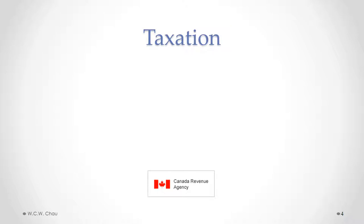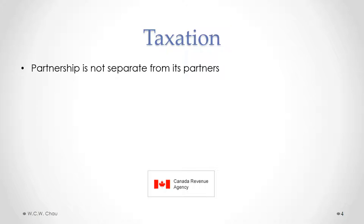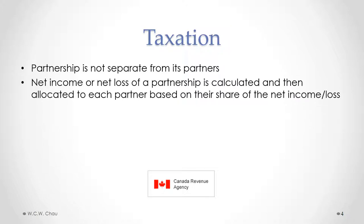How is a general partnership taxed? Remember the basic key legal aspect is that the owners and the business are one and the same — the partners and the partnership are not separate. So for tax purposes, we first calculate the net income or net loss of the partnership, and then allocate that to each partner based on their share, as determined either under the default rules of the Partnerships Act or under a partnership agreement.